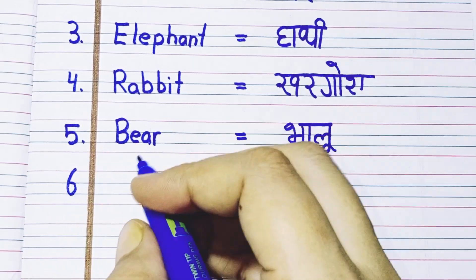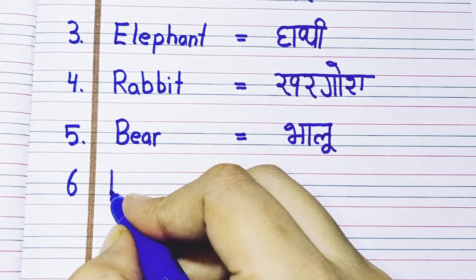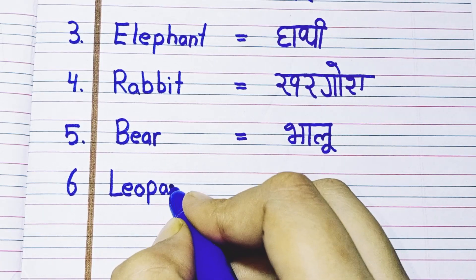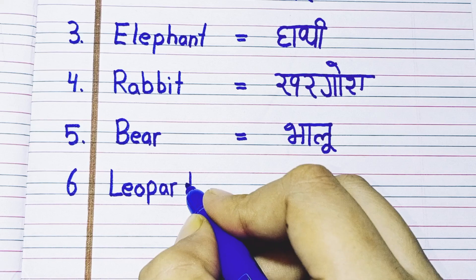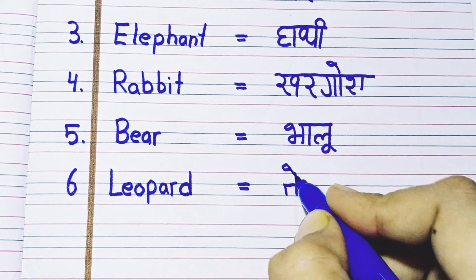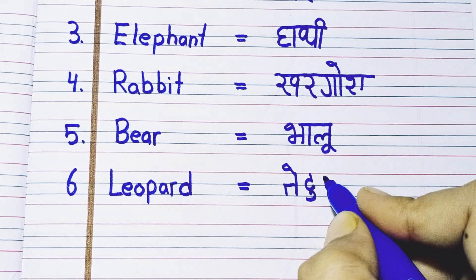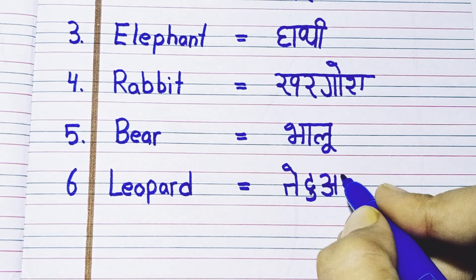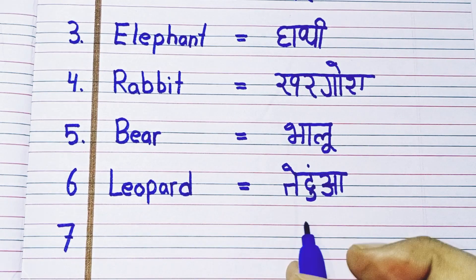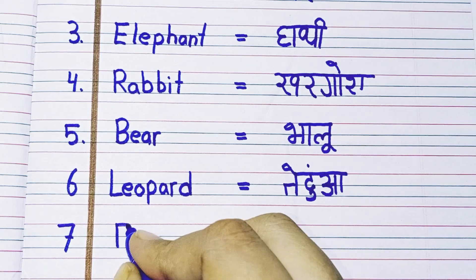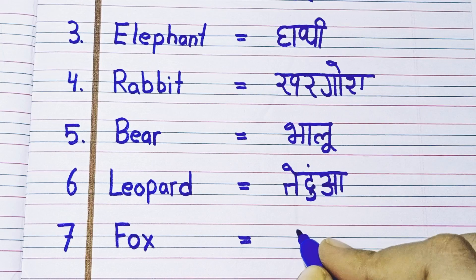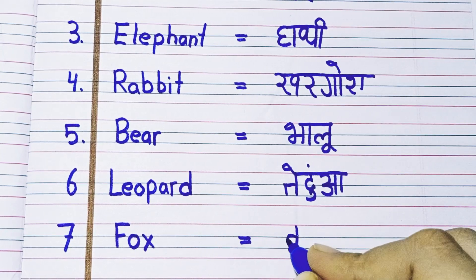Sixth number: L-E-O-P-A-R-D, leopard. Leopard means tendua. Seventh number: F-O-X, fox. Fox means lomri.